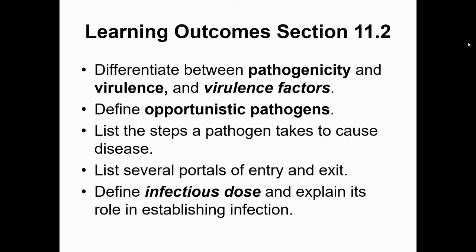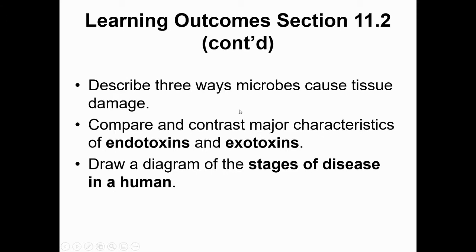We'll look at ways microbes cause tissue damage — through enzymes and toxins. If they don't cause damage once they've infected us, they're either symbionts or commensals. There is also a graph showing the stages of disease in a human, and I want to make sure we know the difference between that and the bacterial growth curve graph from chapter 6.